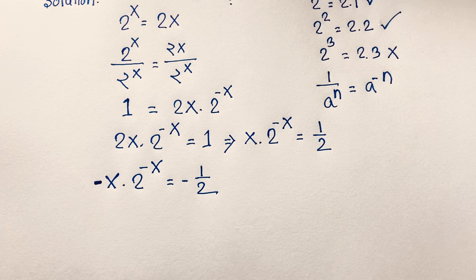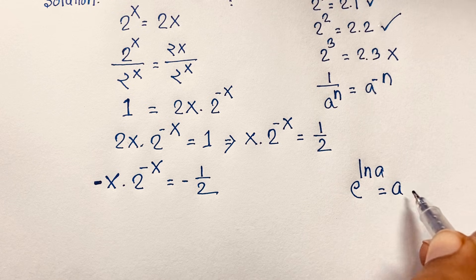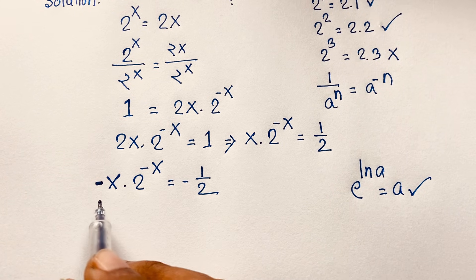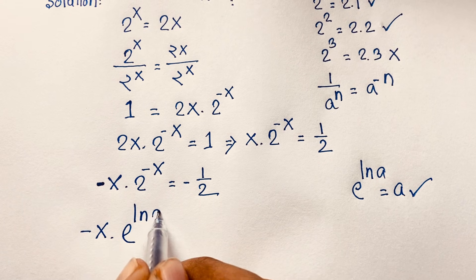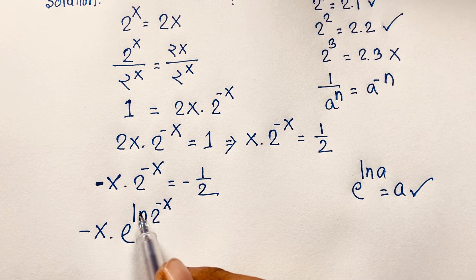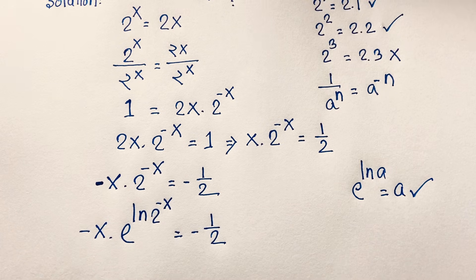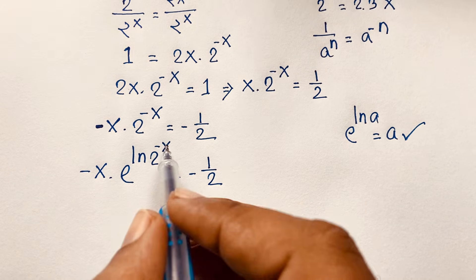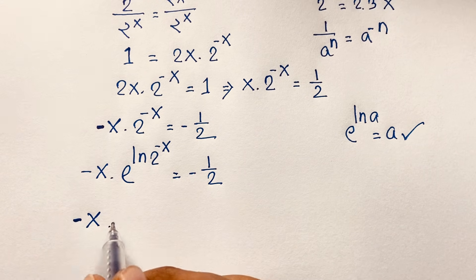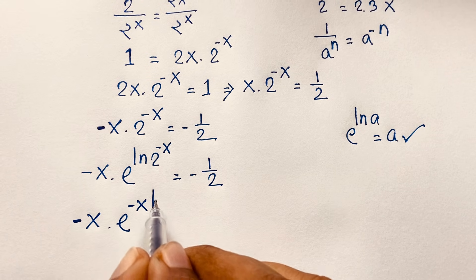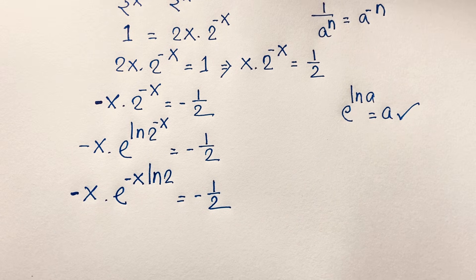We know that e to the power ln(a) equals a. Applying this formula, I rewrite 2^(−x) as e to the power ln(2^(−x)). So the expression becomes: minus x times e to the power (ln 2^(−x)) equals negative one half. Using the exponent rule, −x moves out: minus x times e to the power (−x·ln 2) equals negative one half.